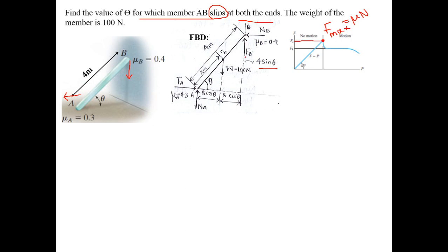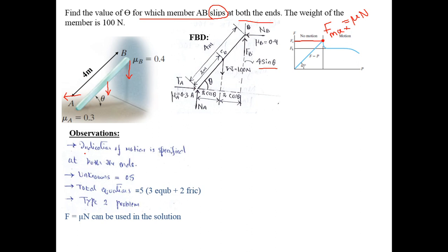With the rod at angle θ: the horizontal dimension to the center of gravity is 2 cos θ, and the total height at B is 4 sin θ. The coefficient of static friction at A is μa = 0.3 and at B is μb = 0.4. From this free body diagram we list observations: indication of motion is specified — slipping at both ends. Unknowns are Fa, Na, Fb, Nb, and θ — five unknowns total.